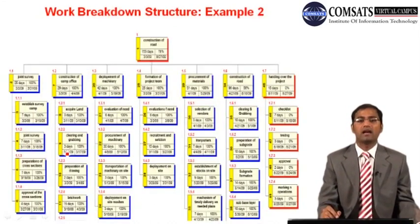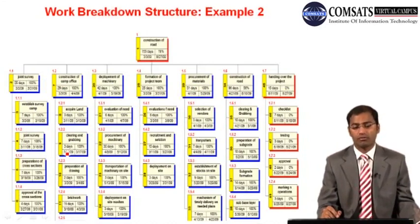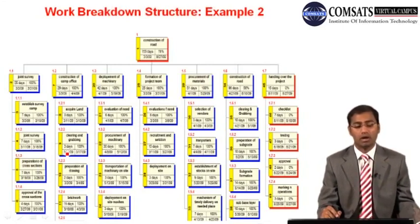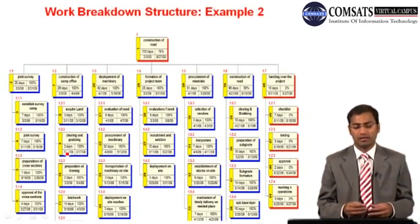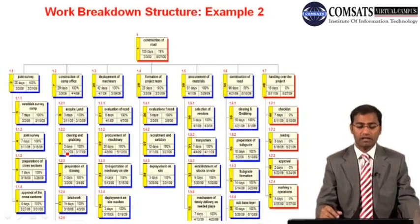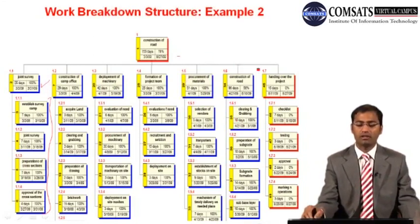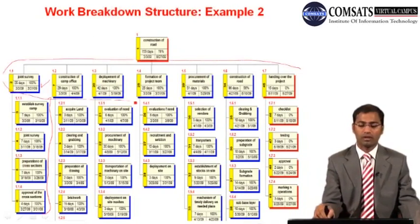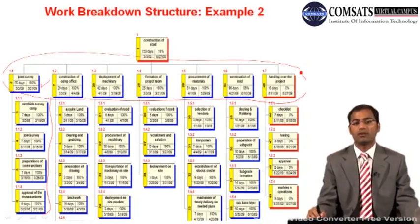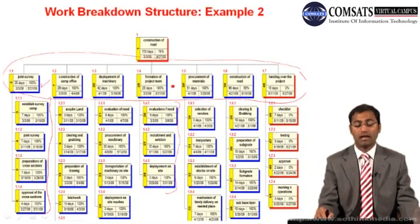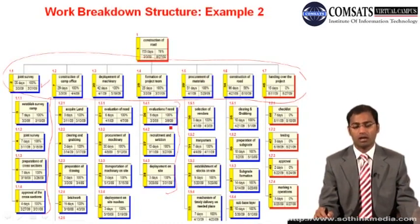There is another example about construction of roads with seven work packages. Through this discussion we concluded: as far as cost is concerned, we can sum up the cost of work packages to reach the cost of a control account, and sum control account costs to reach the project cost. But as far as time is concerned, this approach is not correct — we cannot simply sum durations to get overall project time, due to parallel activities and other constraints.